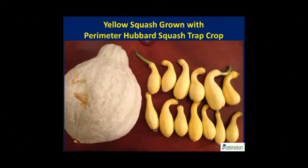In a 2015 study at Coleman, Alabama, about half an acre of yellow squash was produced without the use of conventional or organic insecticides on the main crop. The main crop needed fungicide applications due to hot and humid weather conditions.